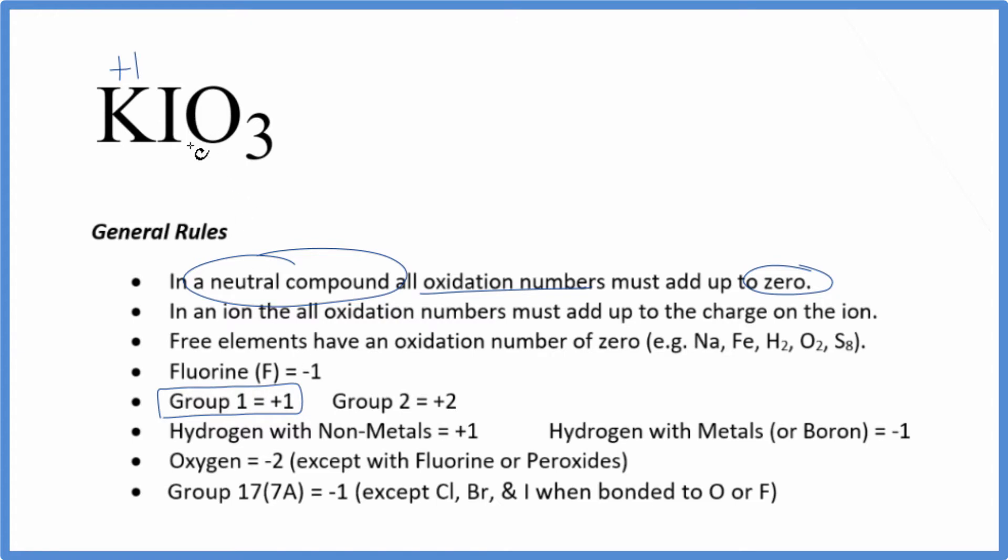The iodine - normally we think of these elements like iodine in group 17 as being minus one, but when they're bonded to oxygen or fluorine we really don't know the oxidation number. We're going to call that X. Oxygen though, that's almost always minus two with just a few exceptions. So each oxygen atom here, each of these three oxygen atoms, has an oxidation number of minus two.